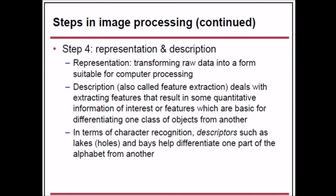Step 4 is representation and description. Representation transforms raw data into a form suitable for computer processing. Description, also called feature extraction, deals with extracting features that represent quantitative information of interest or features basic for differentiating one class of objects from another. For character recognition, descriptors such as lakes, holes, and bays help differentiate one part of the alphabet from another.